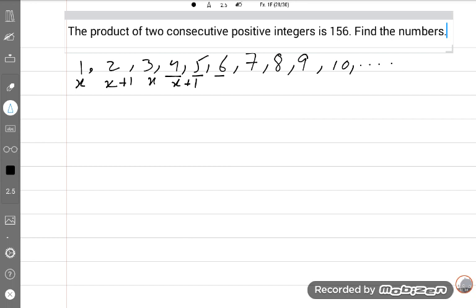Okay, so now let's start the solution. First integer is equal to x. Second integer will be x plus 1. Their product is equal to 156.